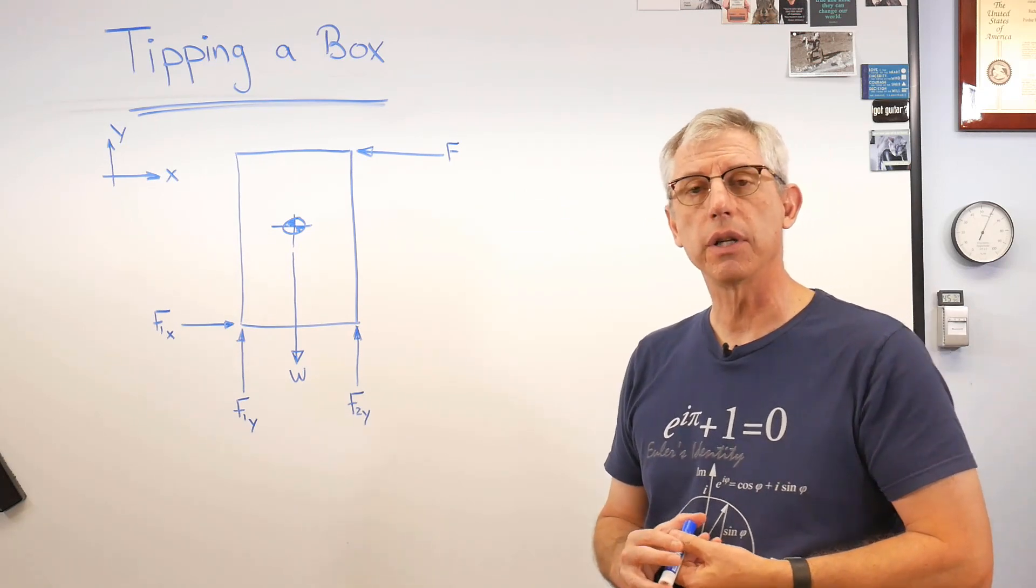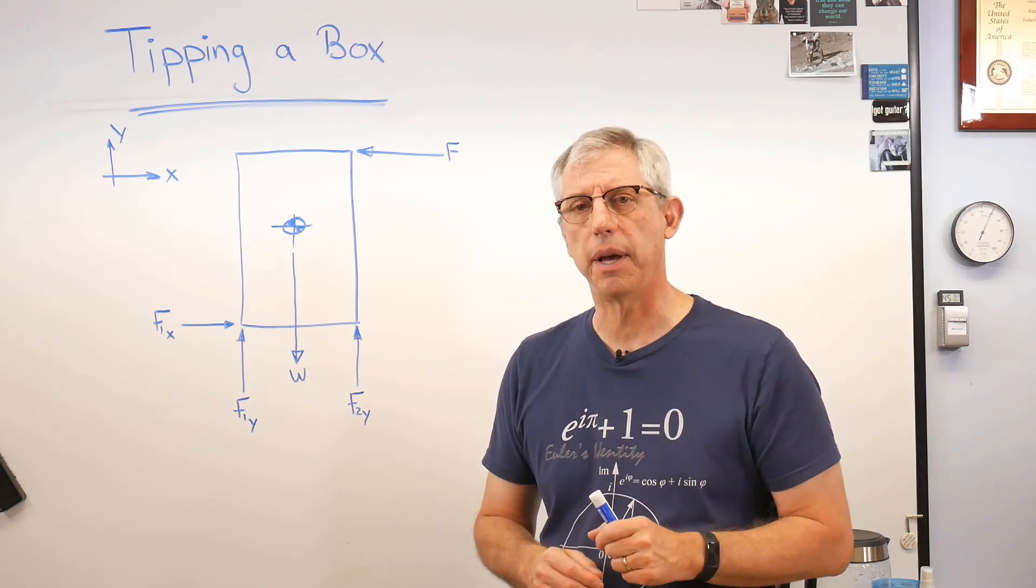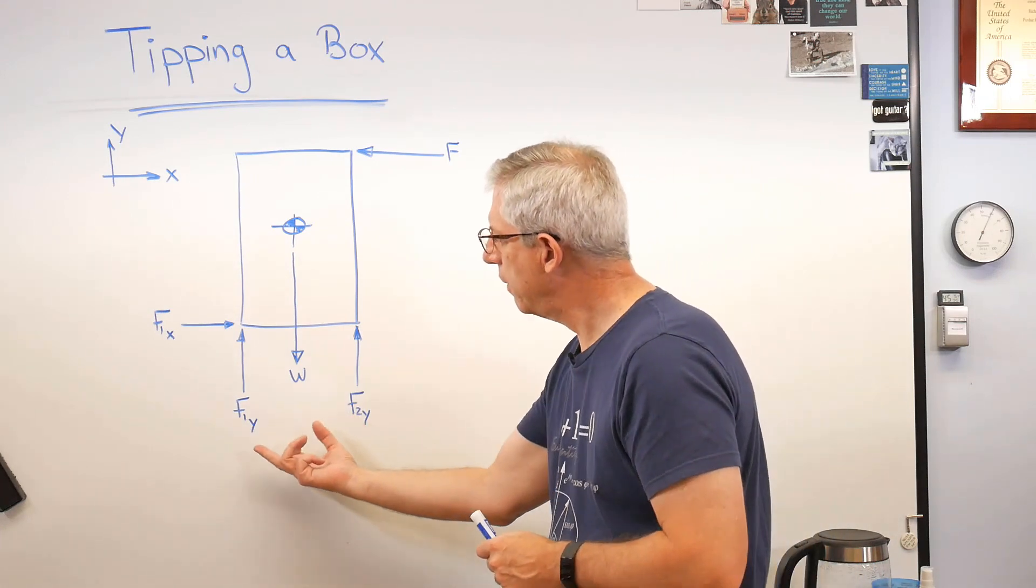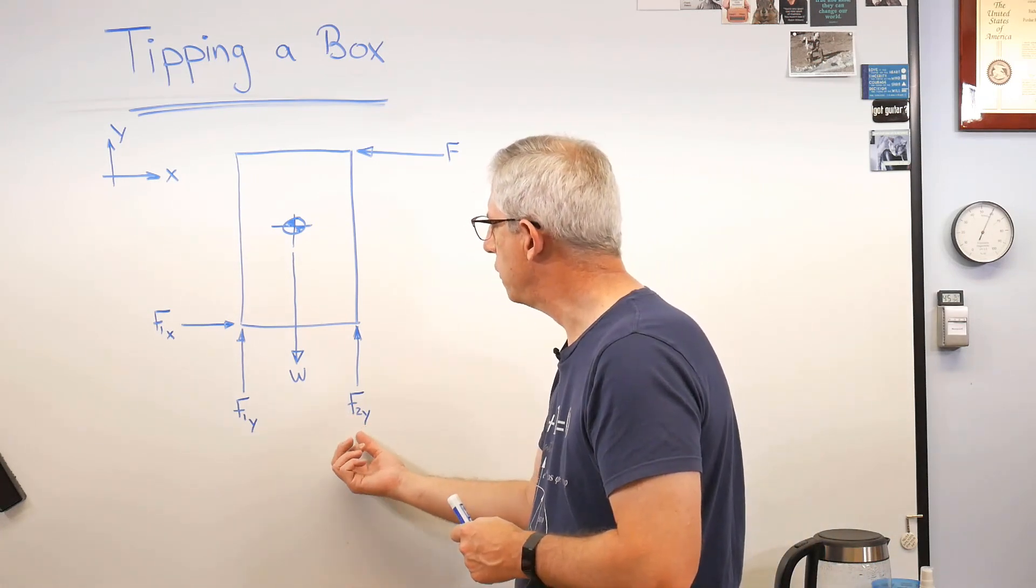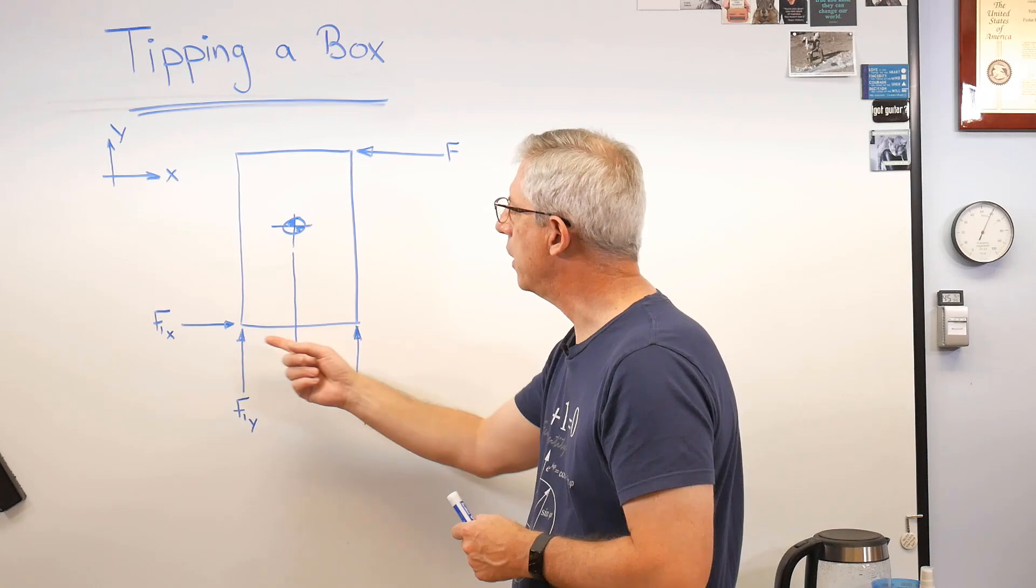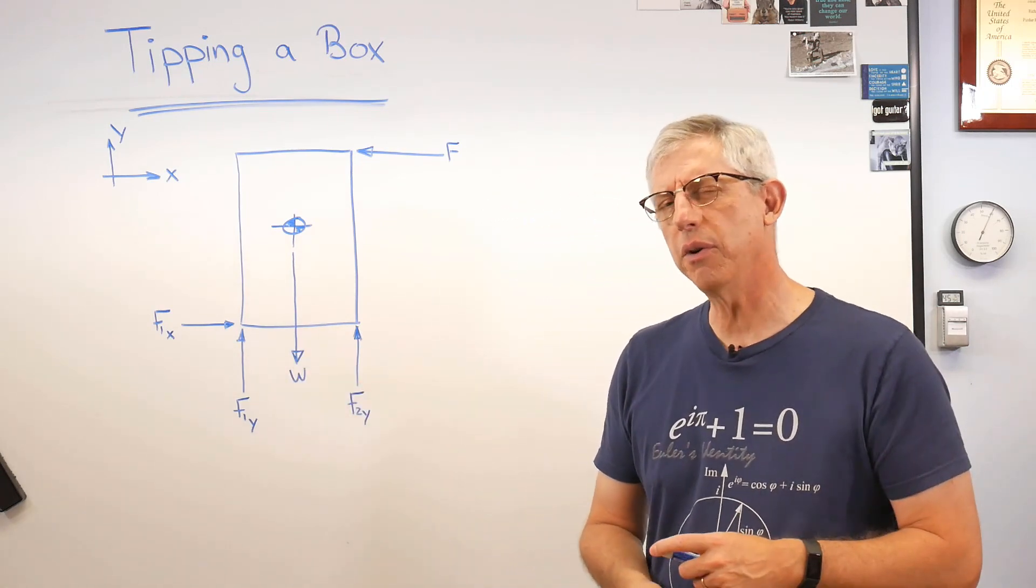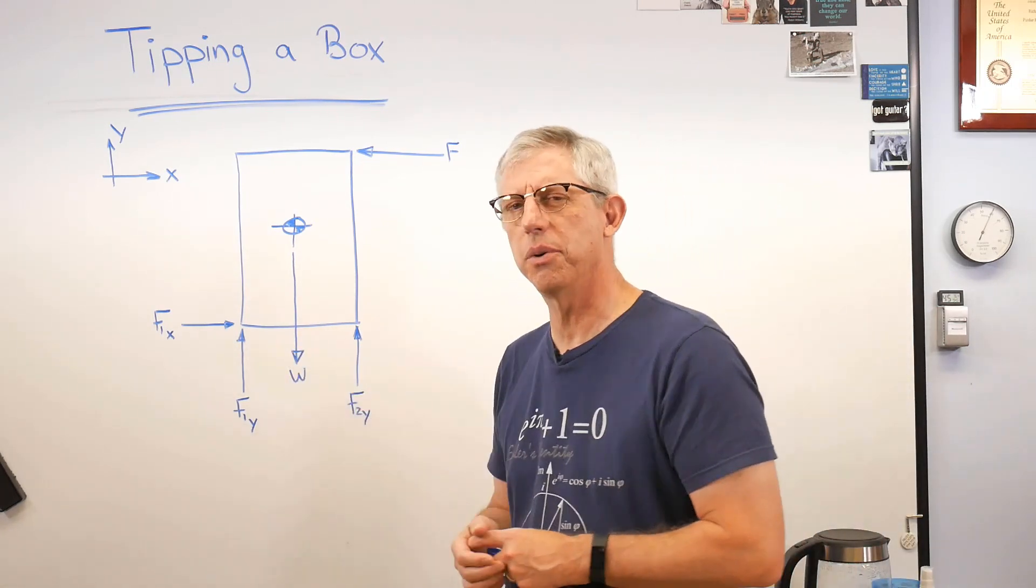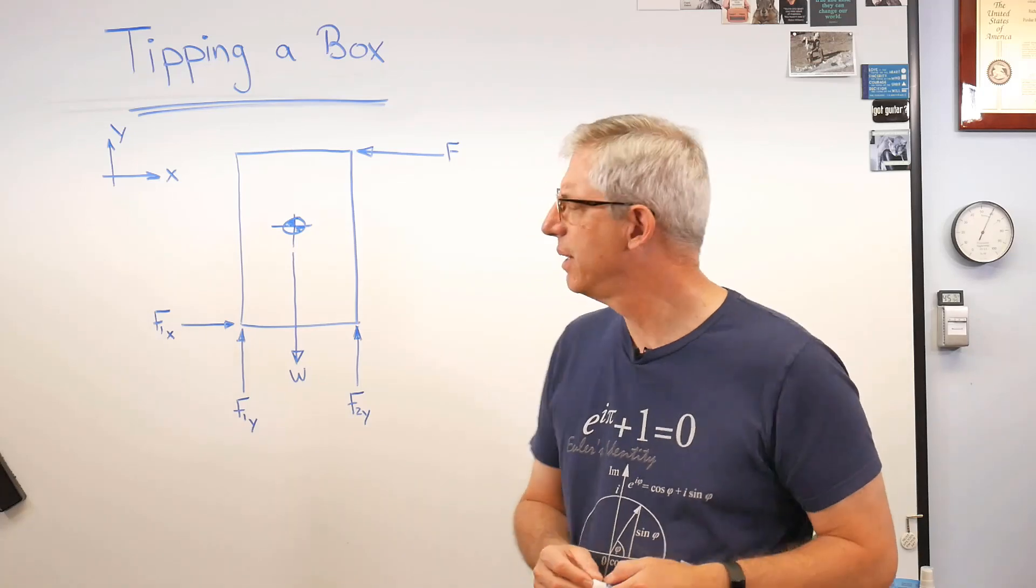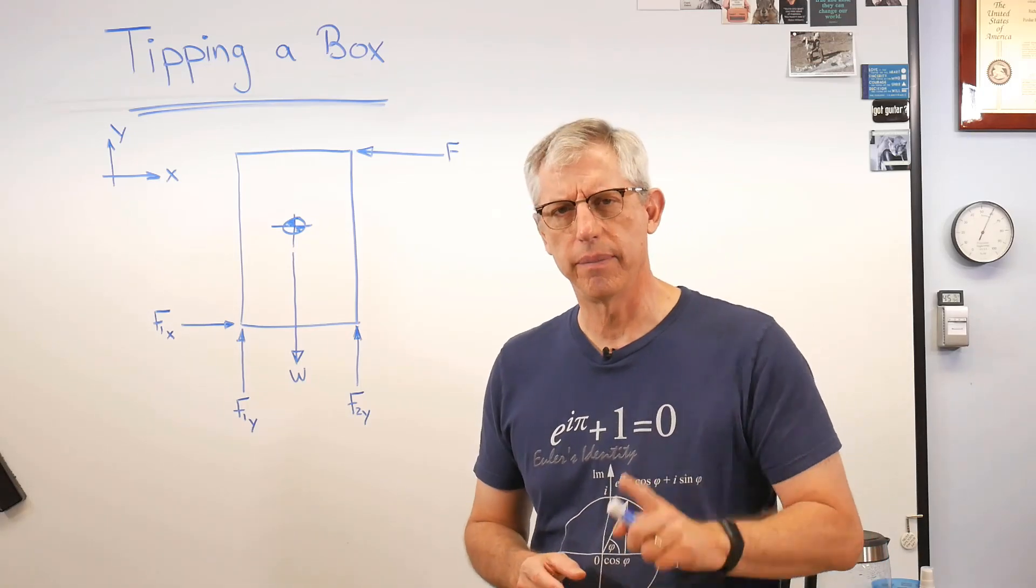But to start, let's talk about what happens when the box first starts to tip. Now I've got F1Y and F2Y on the bottom here. What I'm showing here is that the floor is pushing up on the box only at two corners. Really? Is that how boxes sit? Hang on.